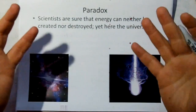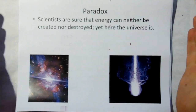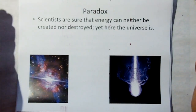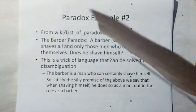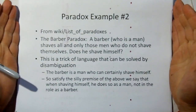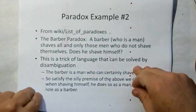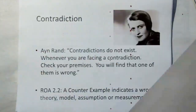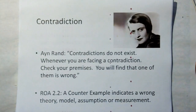Here's an example of a paradox: scientists are sure that energy can neither be created nor destroyed, yet here the universe is full of matter and energy. On contradiction — Ayn Rand said contradictions do not exist. Whenever you are facing a contradiction, check your premises — you will find that one of them is wrong. And this becomes Rule 2.2: a counterexample indicates a wrong theory, model, assumption, or measurement.